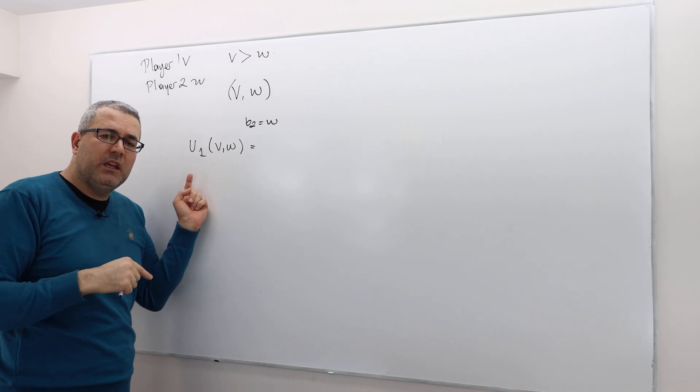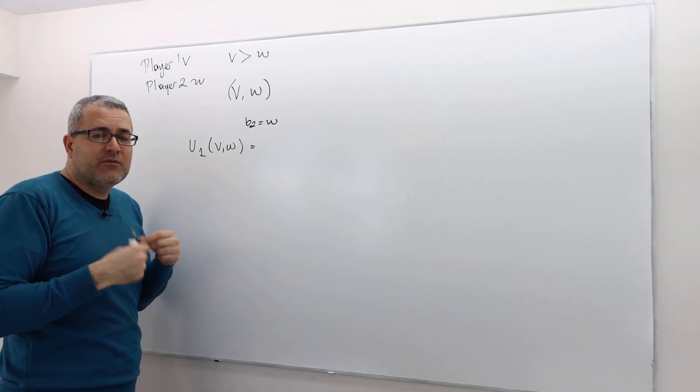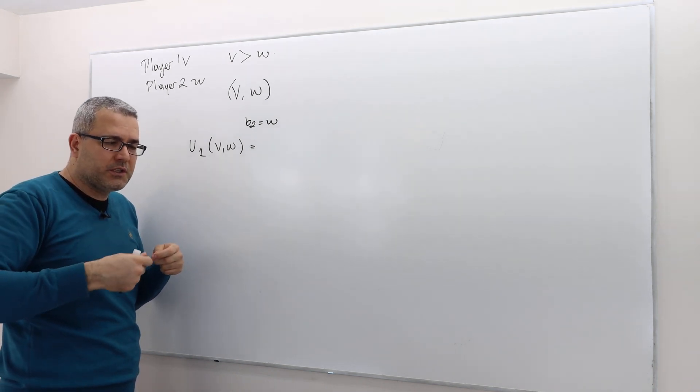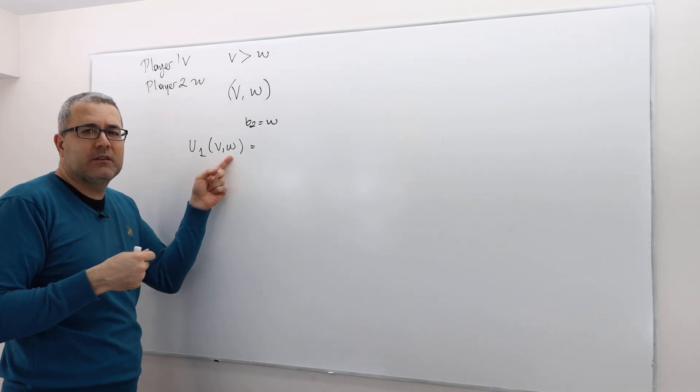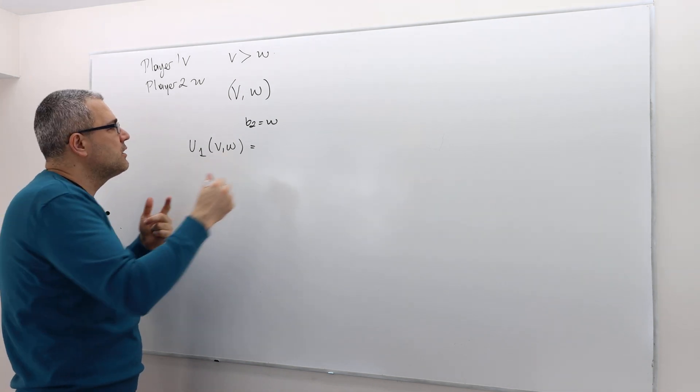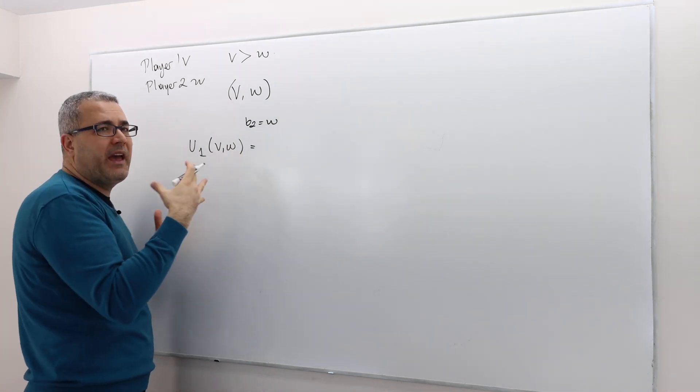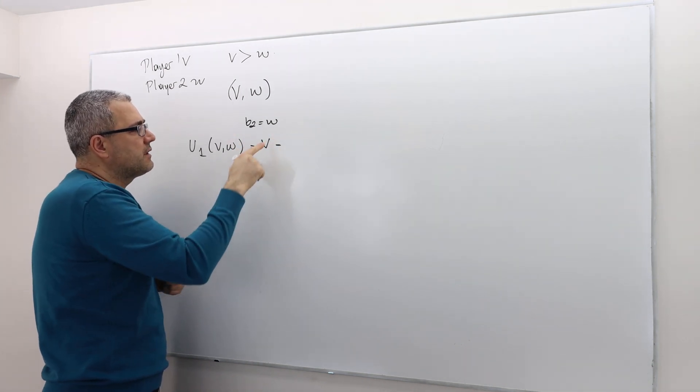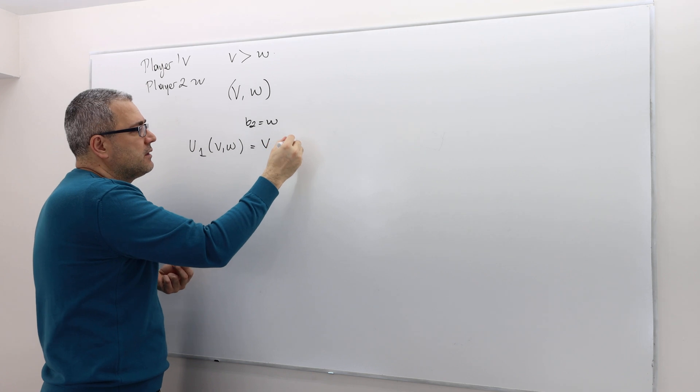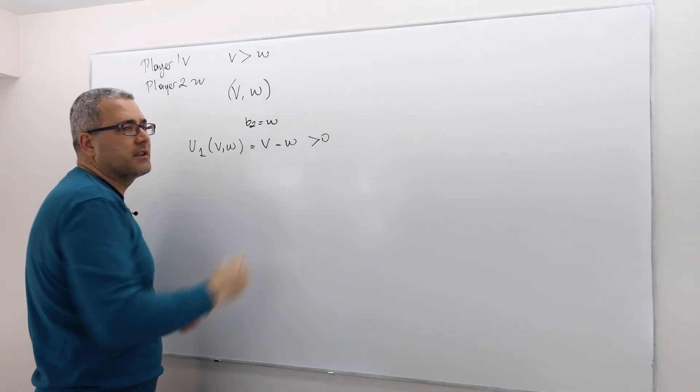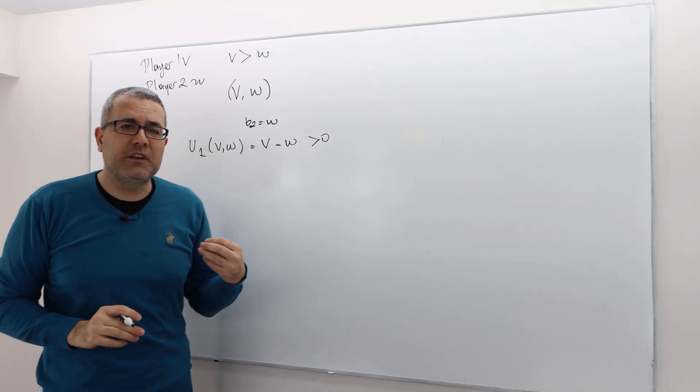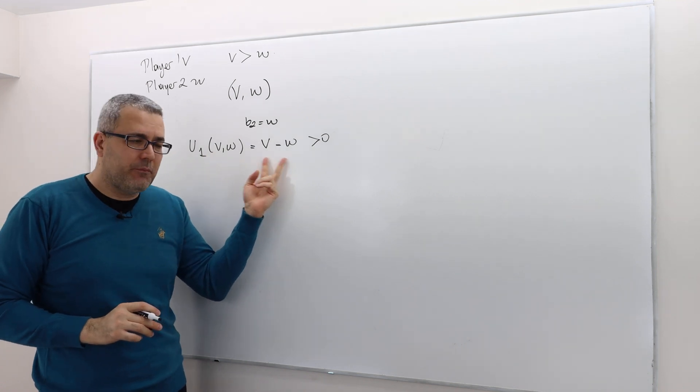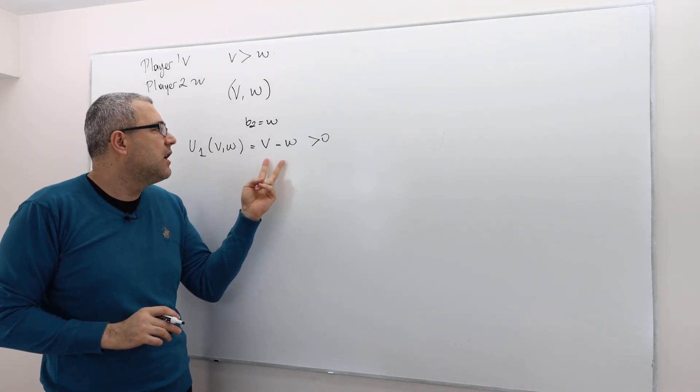And remember, this is a second price auction. So he pays only the second bid, W. So, therefore, player one's payoff is going to be his valuation, V minus the bid he pays, W, which we know is positive. So, the question is, can he achieve payoff higher than this?